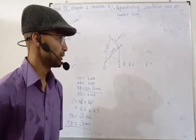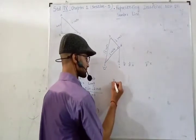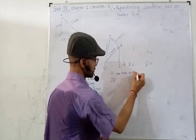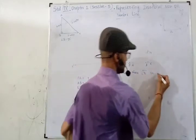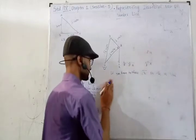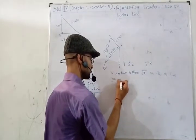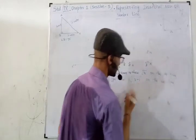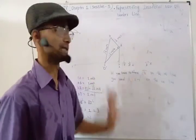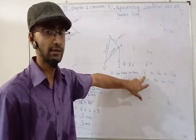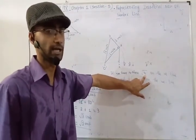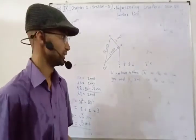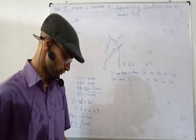So if you have to show root x on the number line, what you need is root x minus 1 already on the number line. If you have root x minus 1, then you draw a perpendicular of 1 unit, and by Pythagoras you get root x. So this way we can use this method to show root 5, root 6, root 7, and so on.